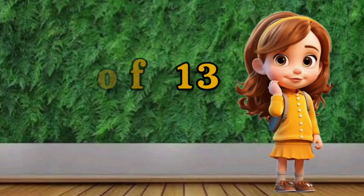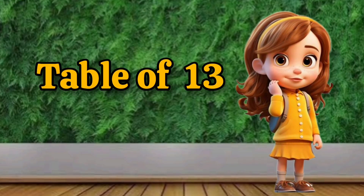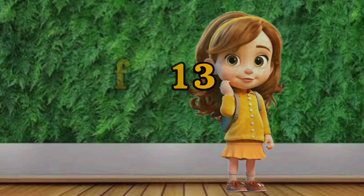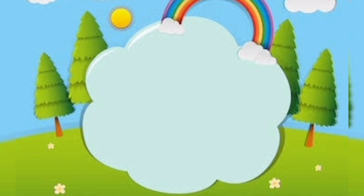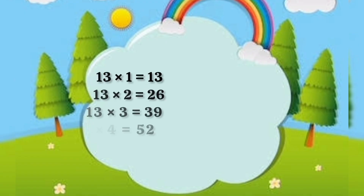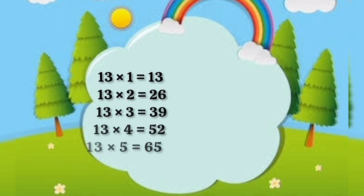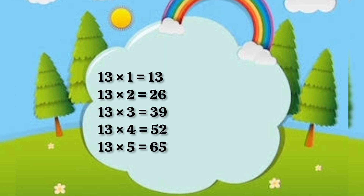Table of 13. 13 1s are 13, 13 2s are 26, 13 3s are 39, 13 4s are 52, 13 5s are 65.